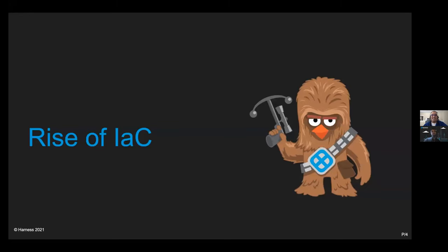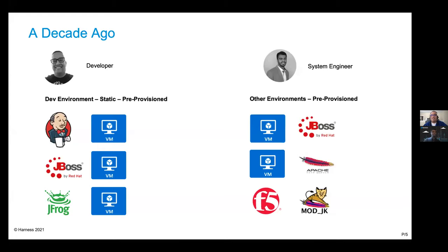So the rise of infrastructure as code. We're going to do a little bit of role play here today. Let's go back about a decade ago. My background is in application development — I've been writing Java for over a decade. Everything we needed was statically provisioned. My dev environment might be my local machine. If there's any dev infrastructure, it might go in a VM — I need a build server, I'd put Jenkins on a VM, a separate VM for an application server, maybe an artifact repository — each as a separate VM.